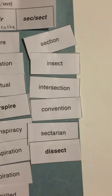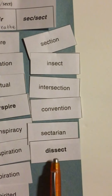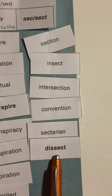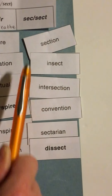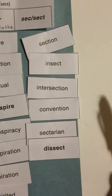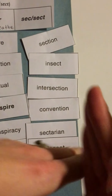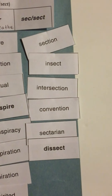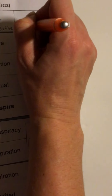And finally our root 'sect.' This one might be a little easier — especially here, this is a good clue word. What does 'sect' mean? An insect comes in pieces — they come in sections. An intersection is a street that has been cut by another street. 'Sect' means to cut.